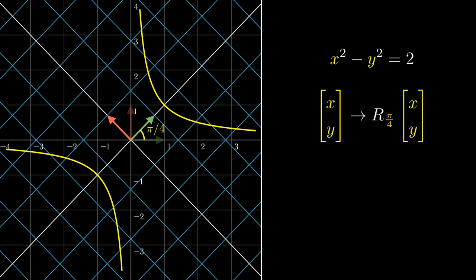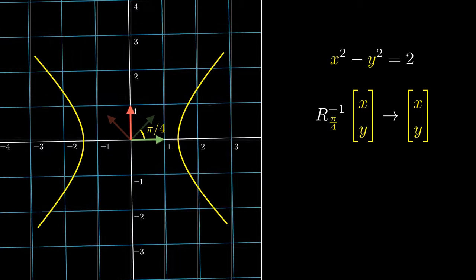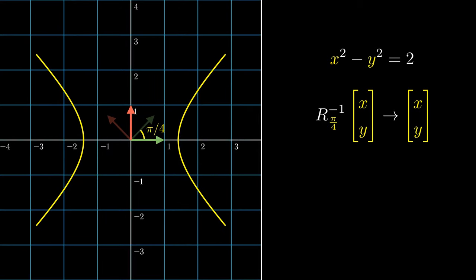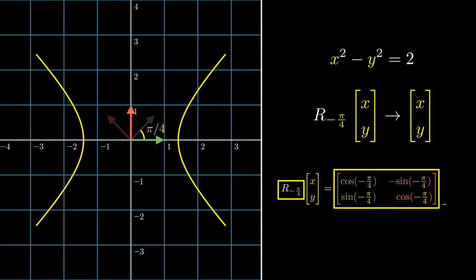The reverse process is to undo this rotation. But this looks like rotating by pi over 4 radians in the clockwise direction. Equivalently, we are rotating by the angle negative of pi over 4 radians. But writing it as r sub negative pi over 4 is really an abbreviation for the rotation matrix. We can plug in the angle negative of pi over 4 and pre-multiply this matrix with the vector xy.